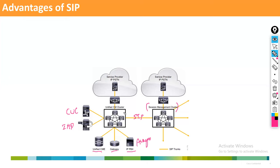SIP protocol can be used everywhere: IP phone to call manager, call manager to gateway, gateway to service provider, call manager to Unity Connection, call manager to IMP server, one cluster to another cluster, Cisco to third-party vendor — between every device. That's why SIP is such a widely used protocol, and being clear text is one of its main advantages.